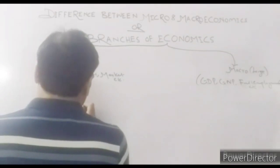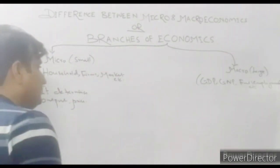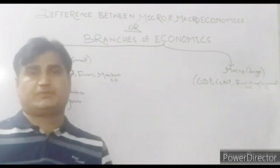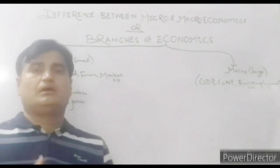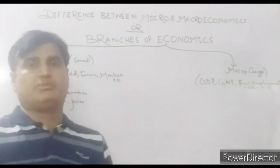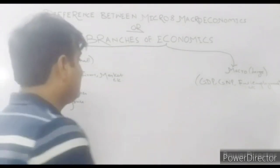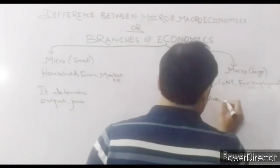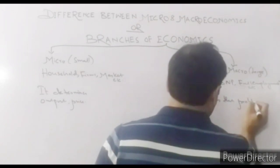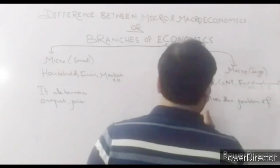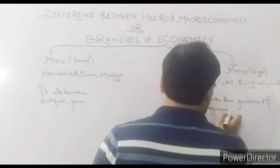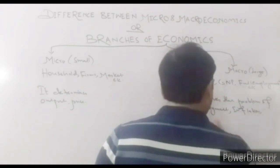Output and price are determined through demand and supply forces. Whereas macroeconomics solves the problem of unemployment, inflation, balance of payments, and so on. It solves the problem of unemployment, inflation, and economic growth.